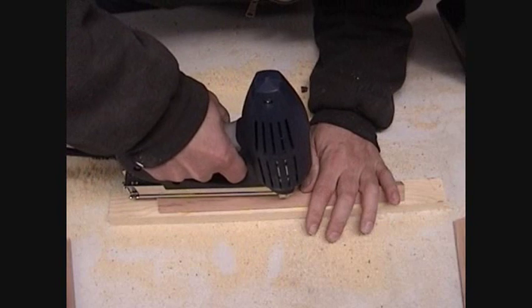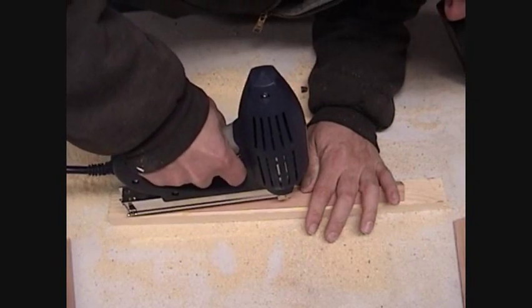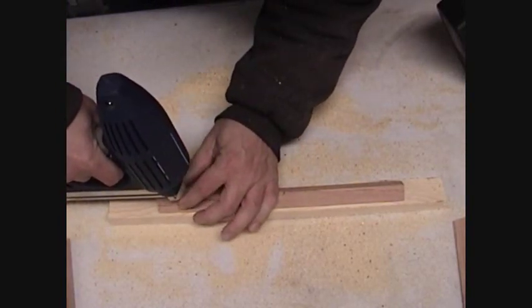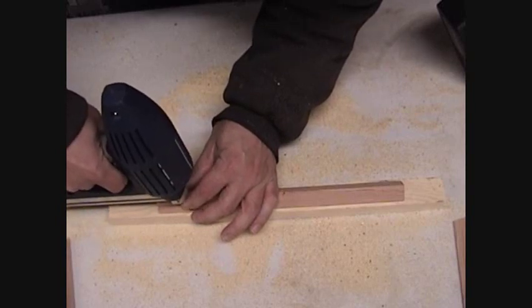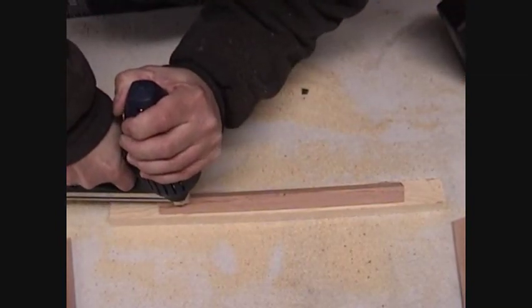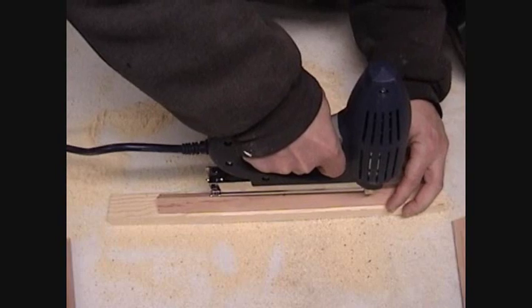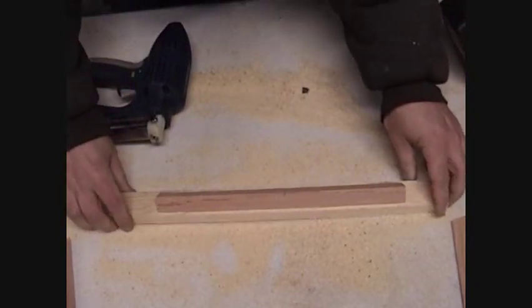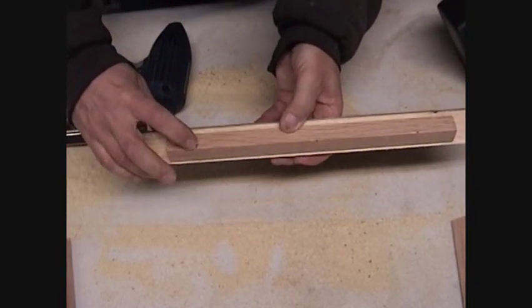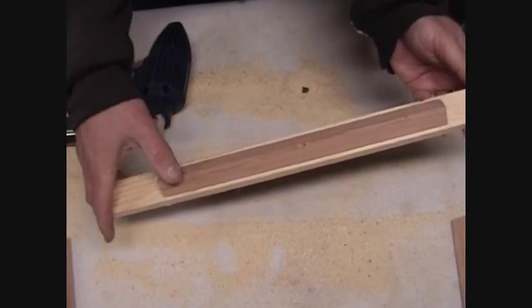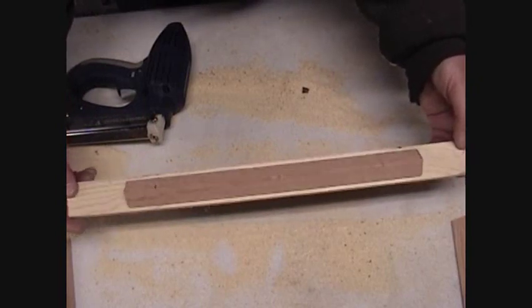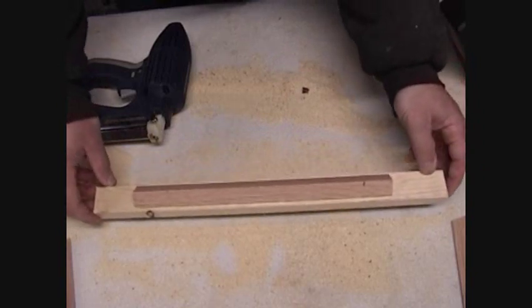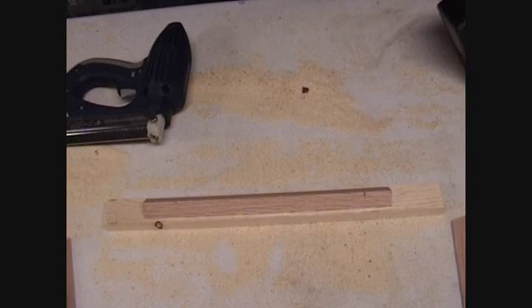And then we'll take our brad nailer, nail gun, whatever we want to call it. Hold it down good. There's one. You want to get this right in the middle on the top. Two. Three. There you go. This one isn't exactly perfect. I do not bother to poke those in with a hammer. If they're hanging out a little bit, I just leave them, because the bees are going to cover that with wax. You can see particularly on this side how the glue is kind of doing its thing. So now you just set this off to the side like that and let it dry. There you go. You have a top bar.